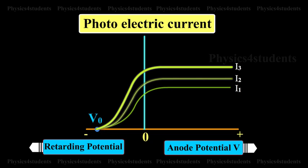Thus, for a given frequency of incident radiation, the stopping potential is independent of its intensity.